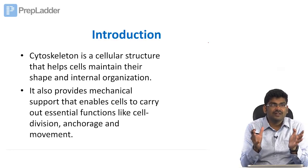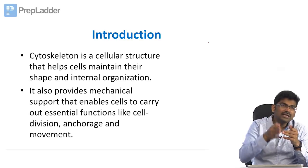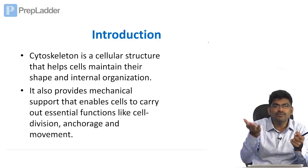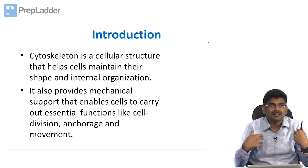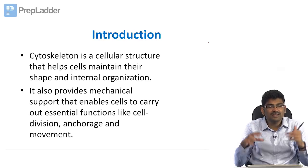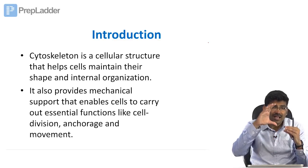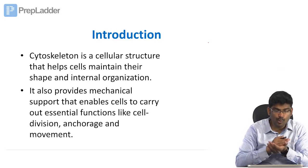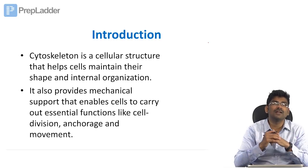Cytoskeleton is a cellular structure that helps in maintenance of shape and internal organization. You know that cell membrane is fluid — the lipid bilayer has fluidity. But when you stand up from a sitting position, all your cells don't just fall down. Just as muscles have a skeleton — a bone for support — the cytoskeleton is a skeleton for cells. These are protein elements maintaining the shape of cells. It also provides mechanical support enabling cells to carry out functions like cell division, transmission, and transport of molecules.